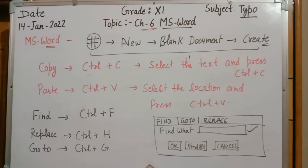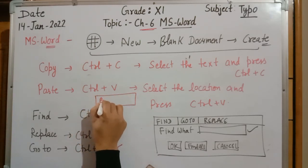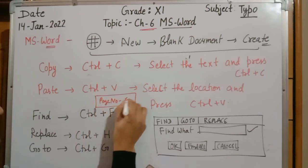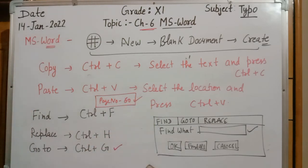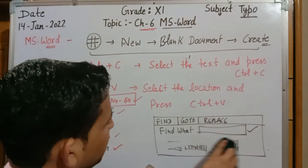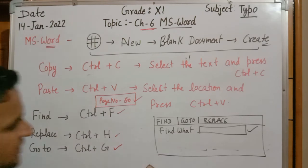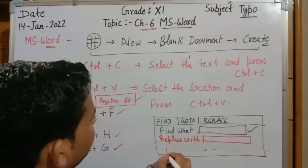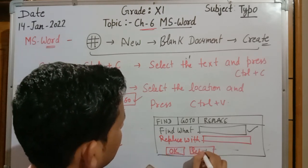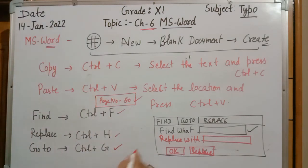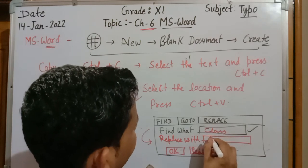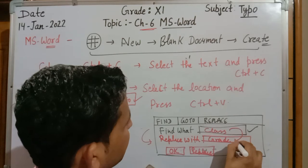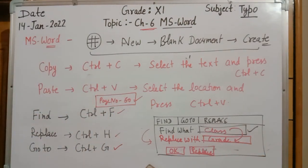The Go To option uses the shortcut key Ctrl+G. A window will appear asking you to type a page number. For example, if you type page number 16 and press Enter, your cursor will directly go to page 16. The Find and Replace option uses Ctrl+H. Two text boxes will appear: one for 'Find what' and one for 'Replace with'. Type both values and press OK or Replace All — it will replace all occurrences. For example, if you type 'class' in Find and 'grade' in Replace, all instances of 'class' will be replaced with 'grade'.